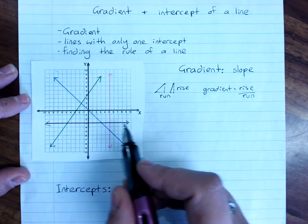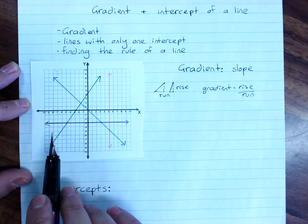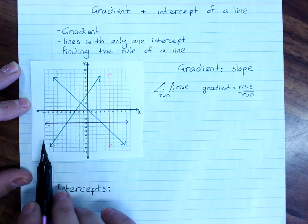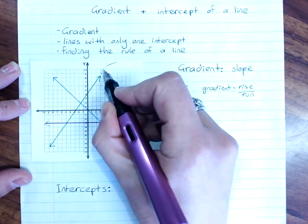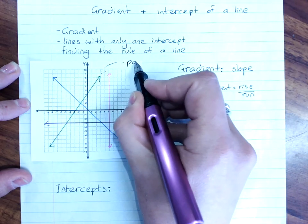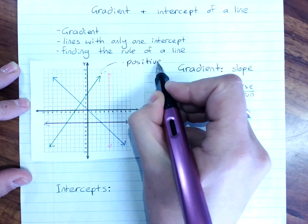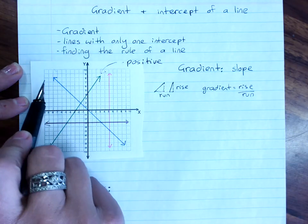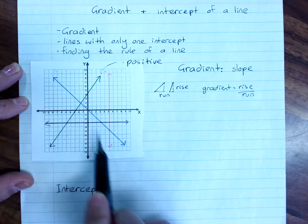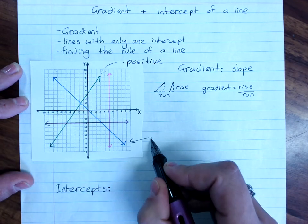Gradient can be positive. A positive gradient slopes up from left to right. So this line here has a positive gradient. A gradient can be negative. It slopes down from left to right. This is a negative gradient.